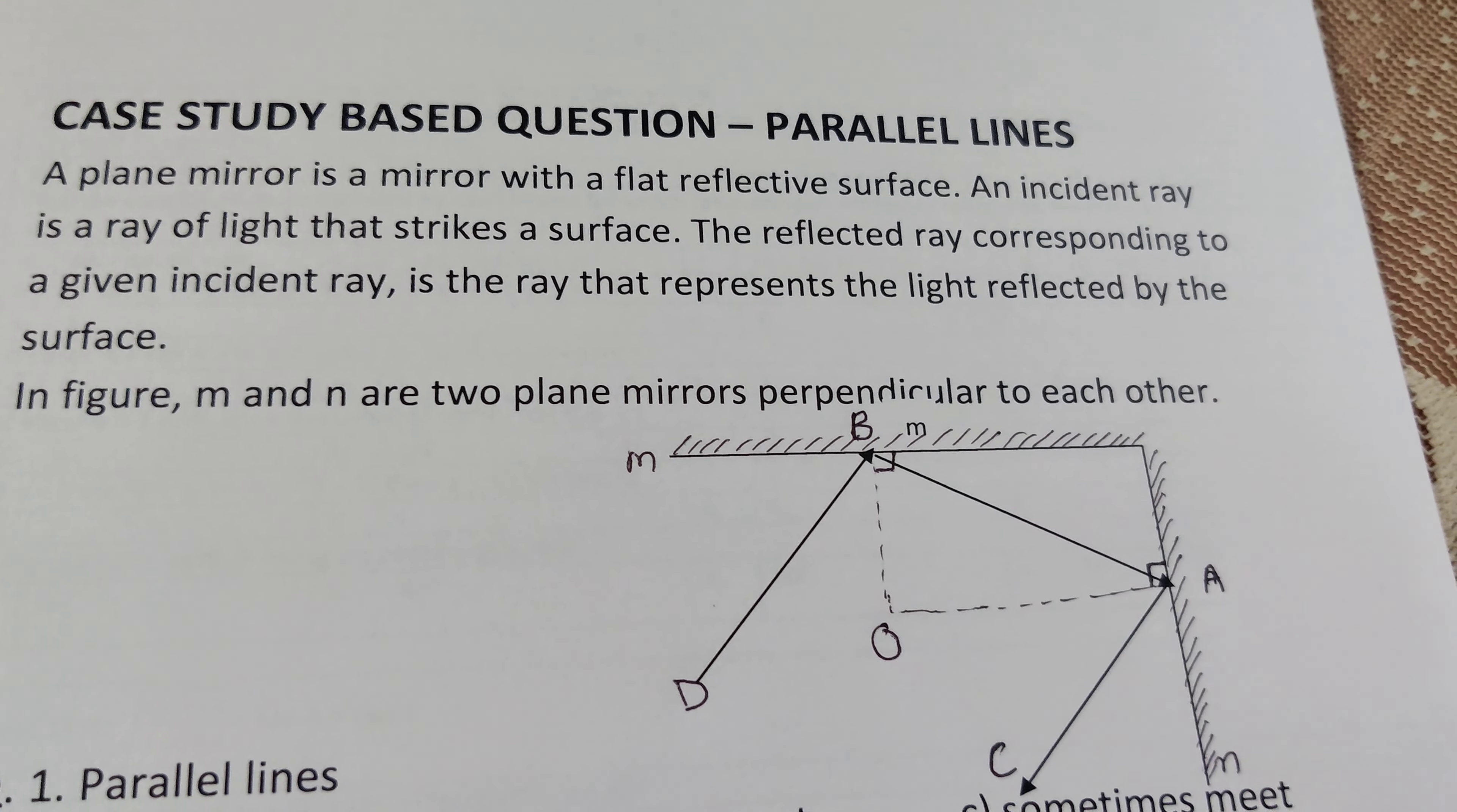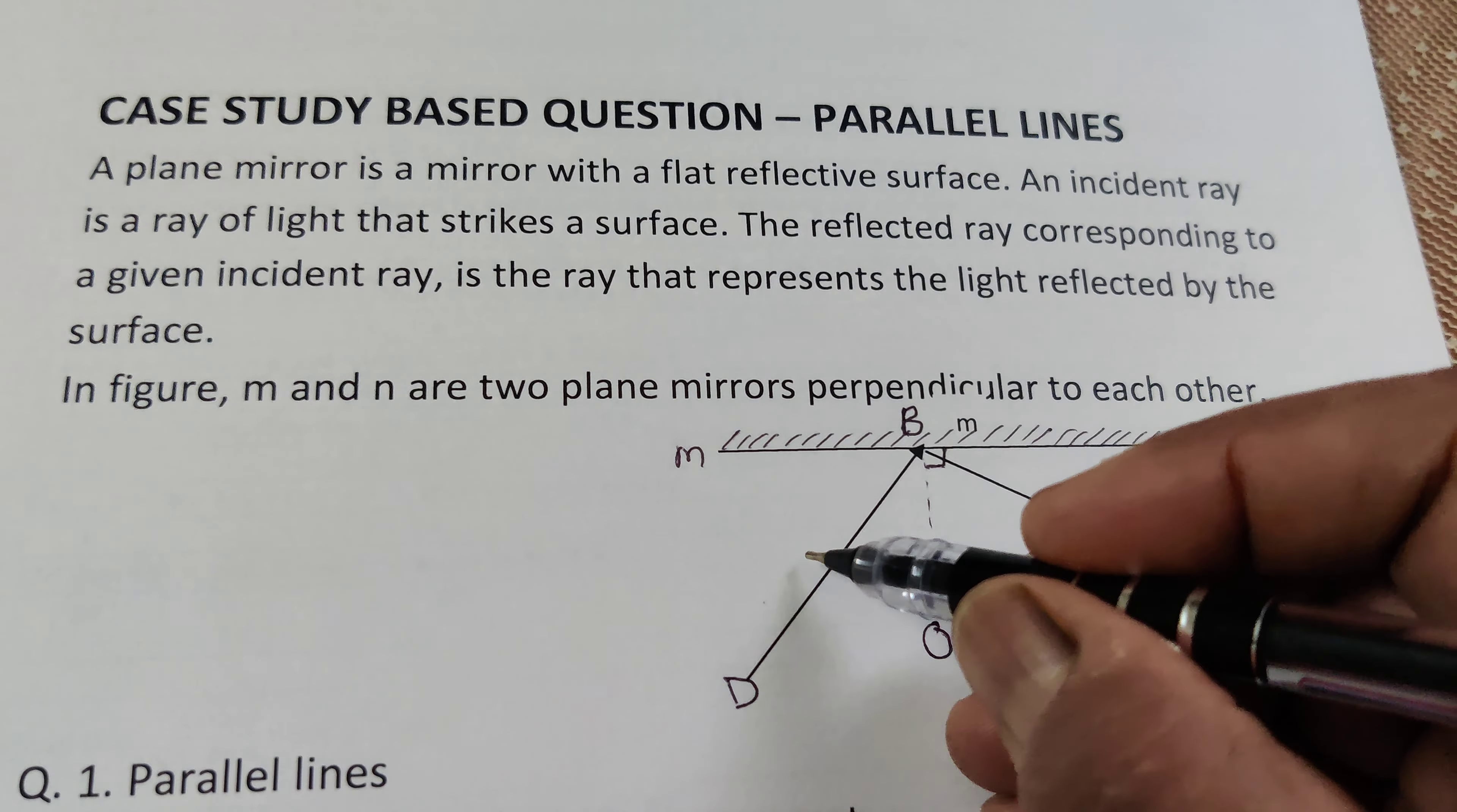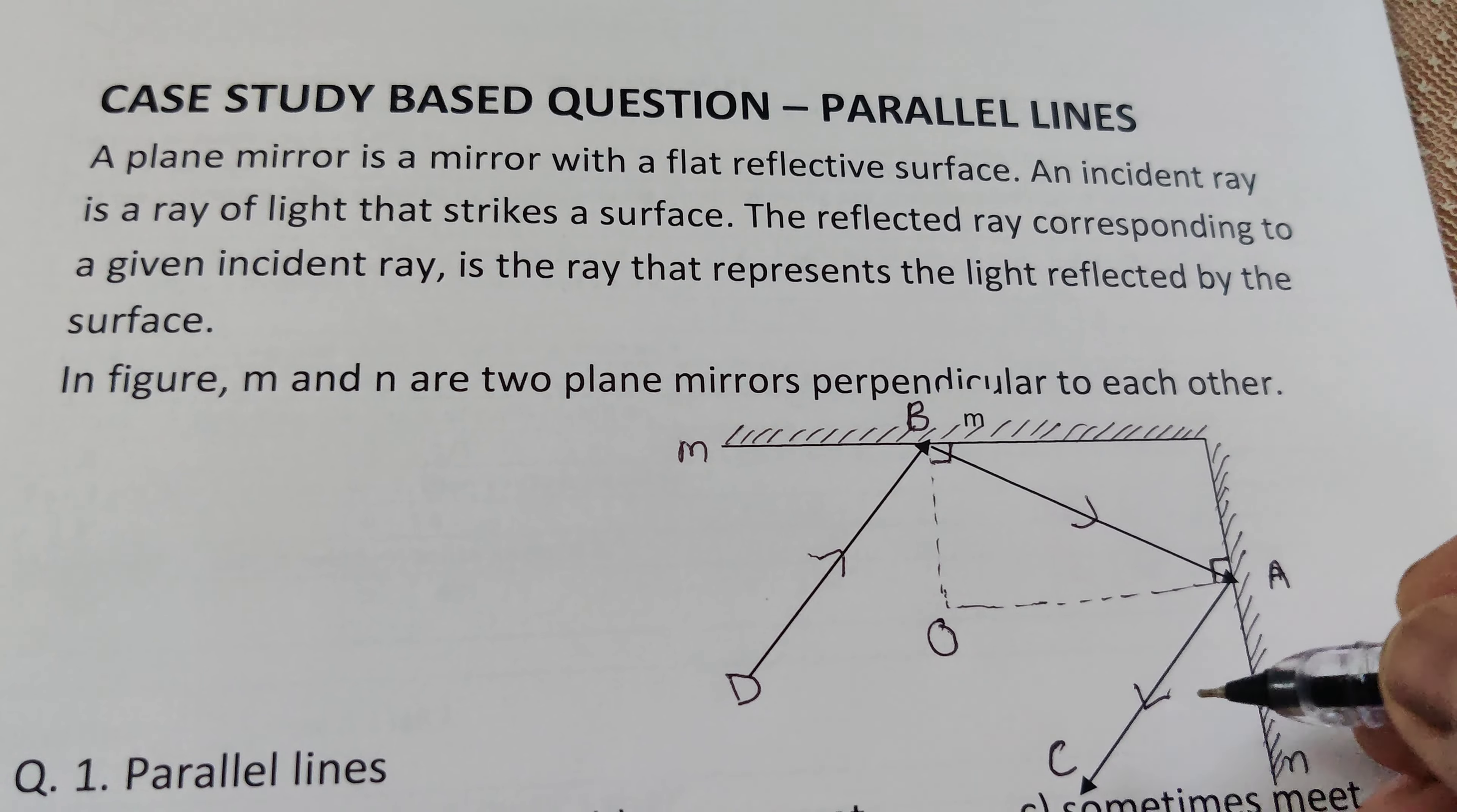In the figure, M and N are two plane mirrors perpendicular to each other. This is the incident ray and the reflected ray, and again incident, this is the reflected ray.